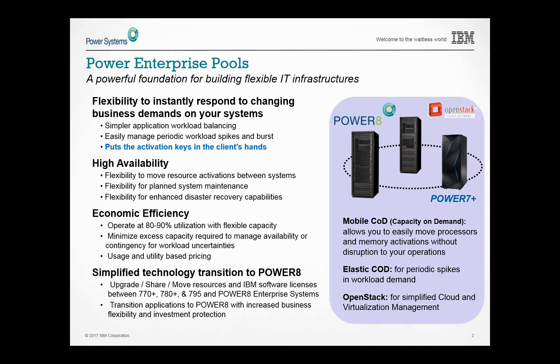Some people believe Power Enterprise Pools to be a great disaster recovery and high availability capability, because you can move these activations around. This mobile capacity on demand gives you lots of flexibility. As you'll see in the chart I've built, it shows how we've evolved from the days of the 595 and CBUs to where we are today, where instead of IBM controlling activations, customers can manage them through an HMC.